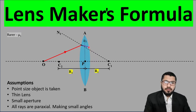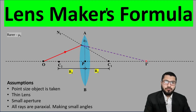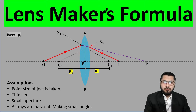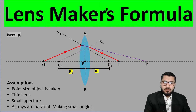If there were no medium change at this first surface, I could extend the line as a dotted line and the image would form at I-dash. But since the medium does change, I-dash is not the actual final image. Now I draw the normal N2 from C2 and consider the actual refraction at the second surface. Here the light goes from a denser to a rarer medium, so it bends away from the normal — you can see the red ray moving away from the normal — and the final image forms at I. I-dash is the intermediate image formed by the first surface refraction.